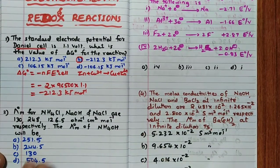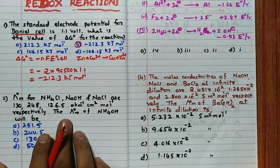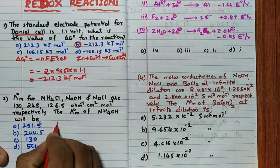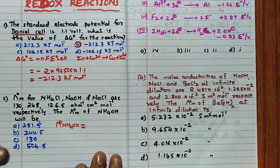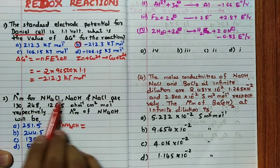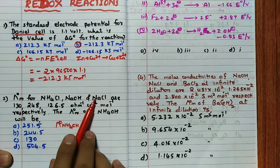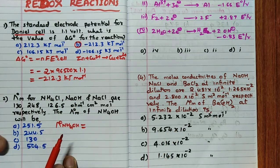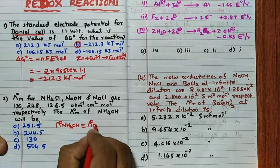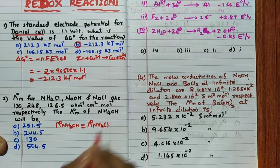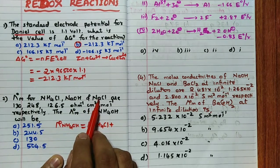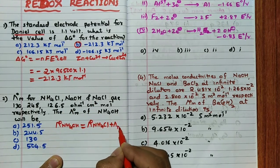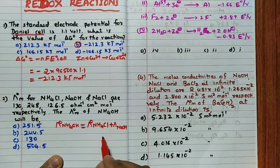The second question: λ°m for NH4Cl, NaOH, and NaCl are given. Using Kohlrausch's law of limiting molar conductivity, we need to find λ°m of NH4OH. Arrange the given values so that Cl⁻ and Na⁺ cancel: take λ°m of NH4Cl plus λ°m of NaOH minus λ°m of NaCl.